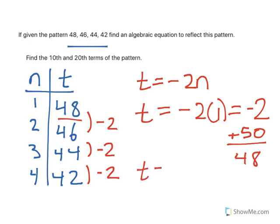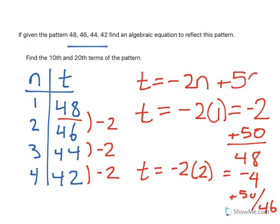If I tried for the next one, equals negative 2, and I put the second term in, that would give me negative 4. Again, I'd have to add 50 to get to the answer of 46. So that helps me with my equation. It's going to be t equals minus 2n plus 50. And that tells me my full equation.